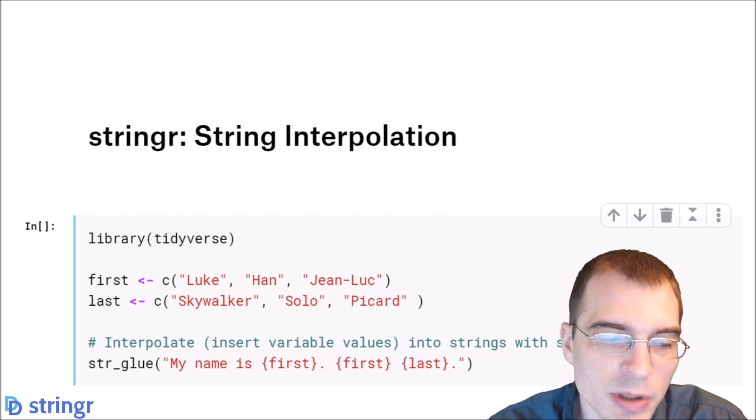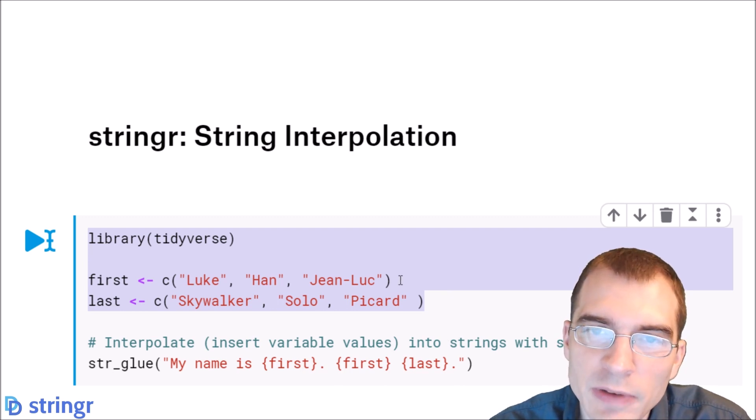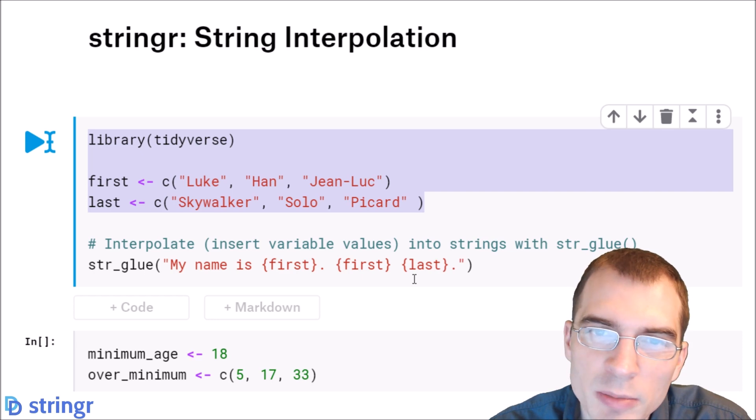So first, we're going to load in the tidyverse and just make some different character data that we're going to interpolate. So interpolation means filling in a value based on some other variable or calculation or perhaps from a data set. So it allows you to essentially create different character strings based on some calculated or stored values instead of having to create them explicitly.